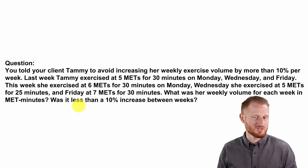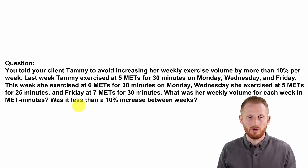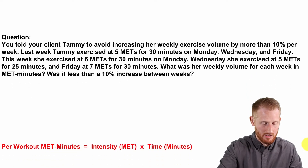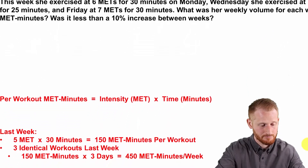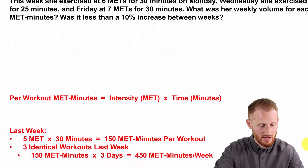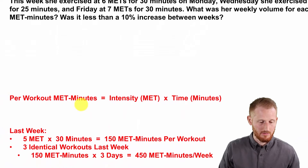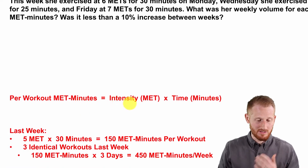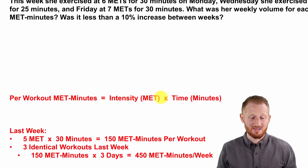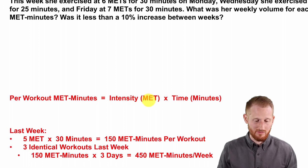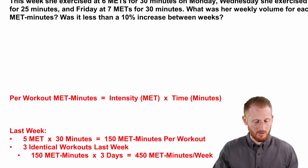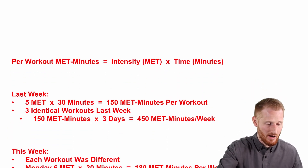So what was her weekly exercise volume in MET-minutes, and did she go over the 10% increase you told her to avoid? The per-workout MET-minute equation is the intensity of the exercise in units of METs times the time spent doing that exercise in minutes — a fairly simple equation.